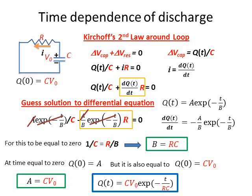So we get that the charge as a function of time is equal to C times V0 times a decaying exponential with a time constant of RC.